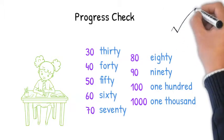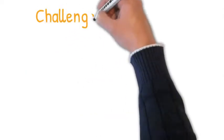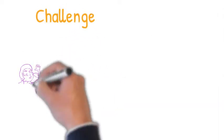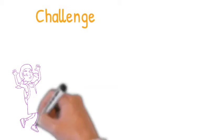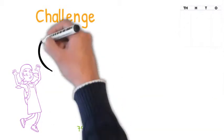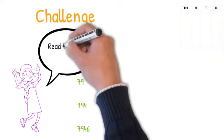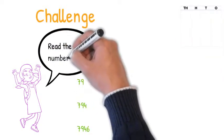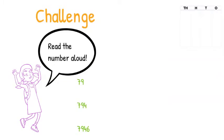I think you're ready for the next challenge. Let's make this a little more challenging then. I know you're ready. So look at these numbers. They are also written in numerals. Can you read these numbers aloud with me? 79, 794, 7,946.